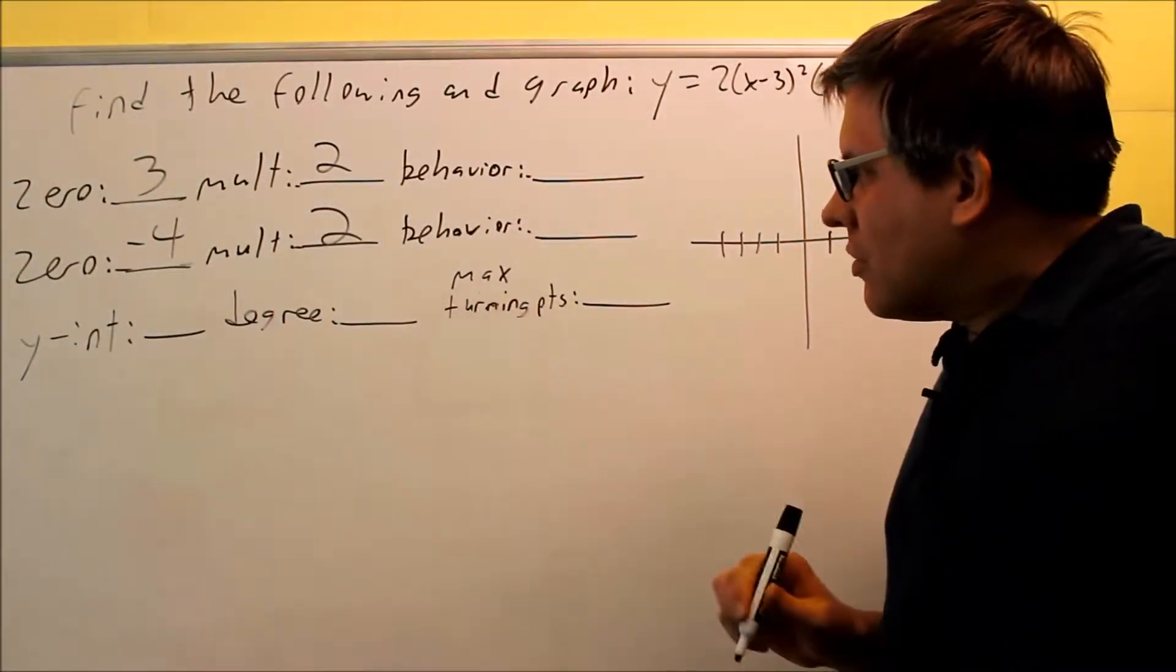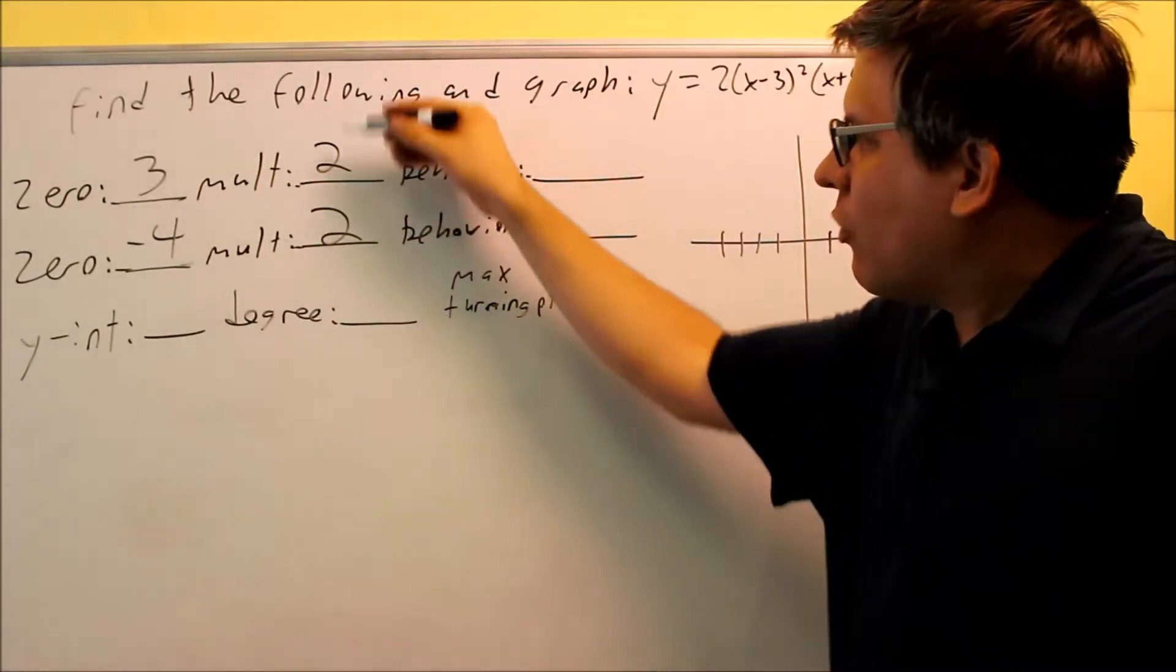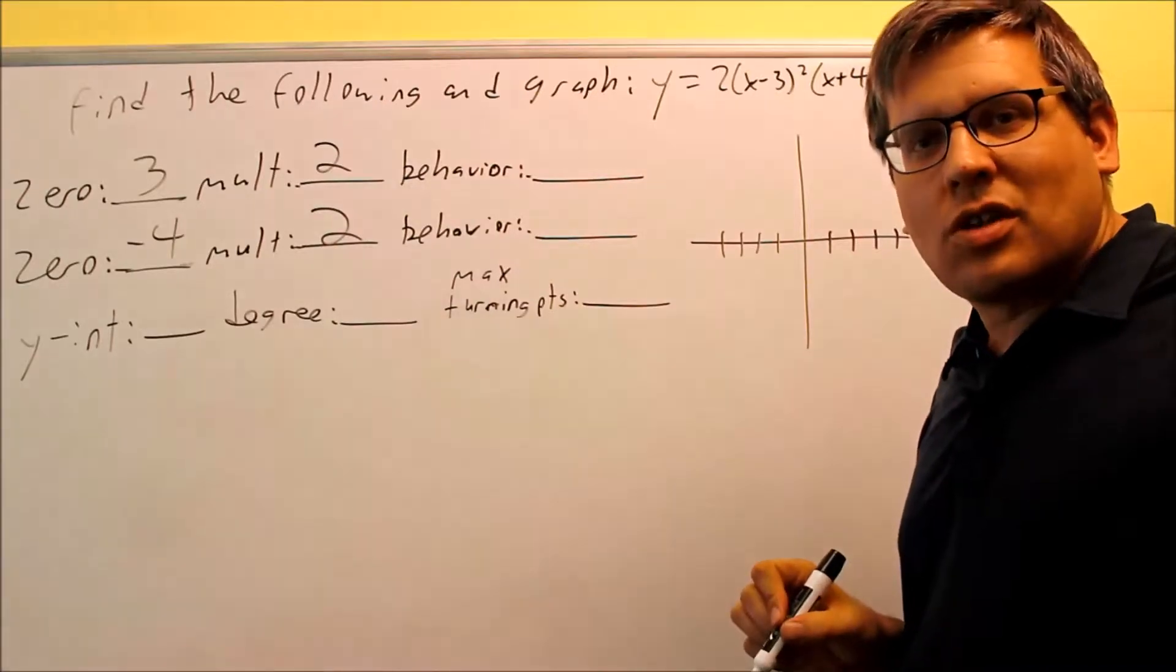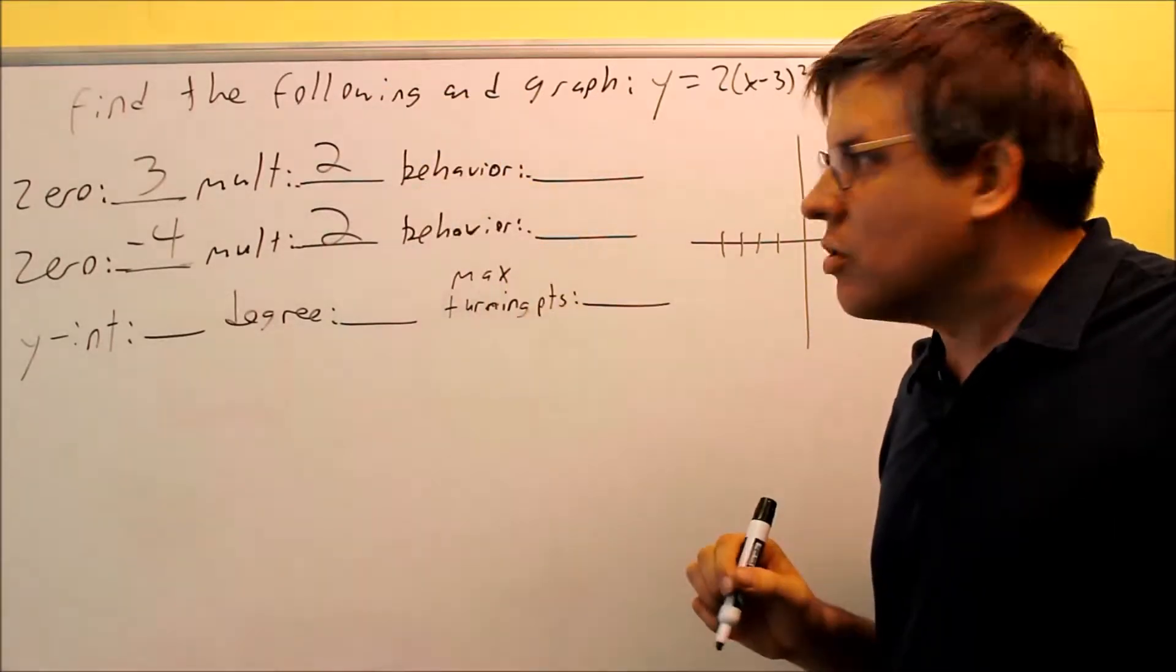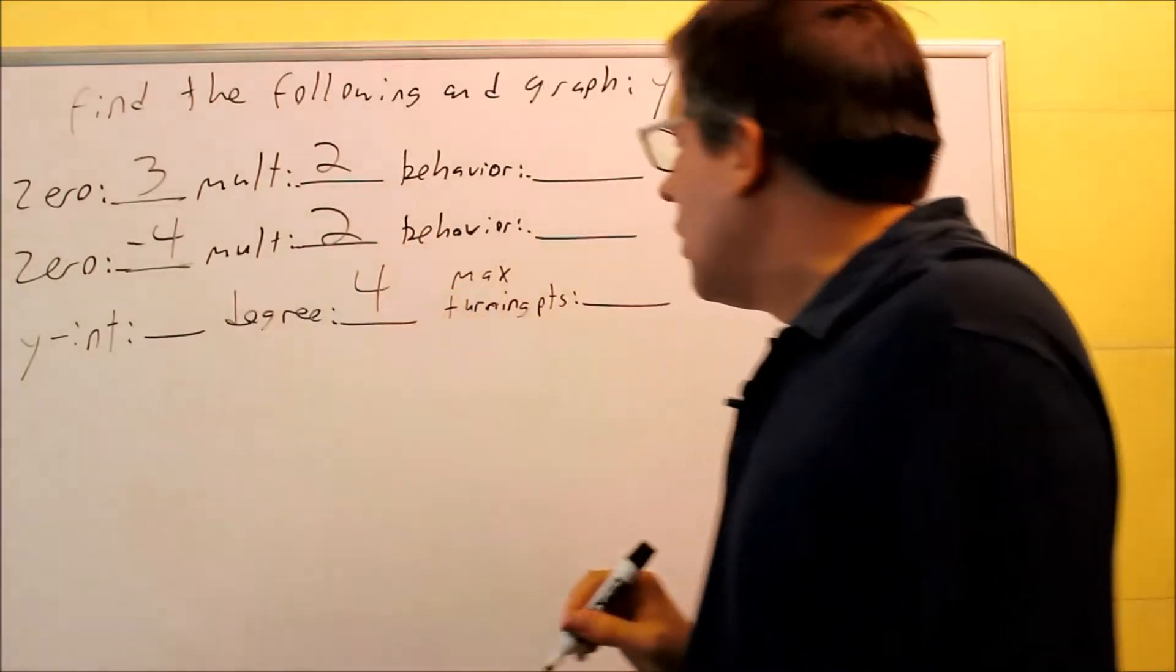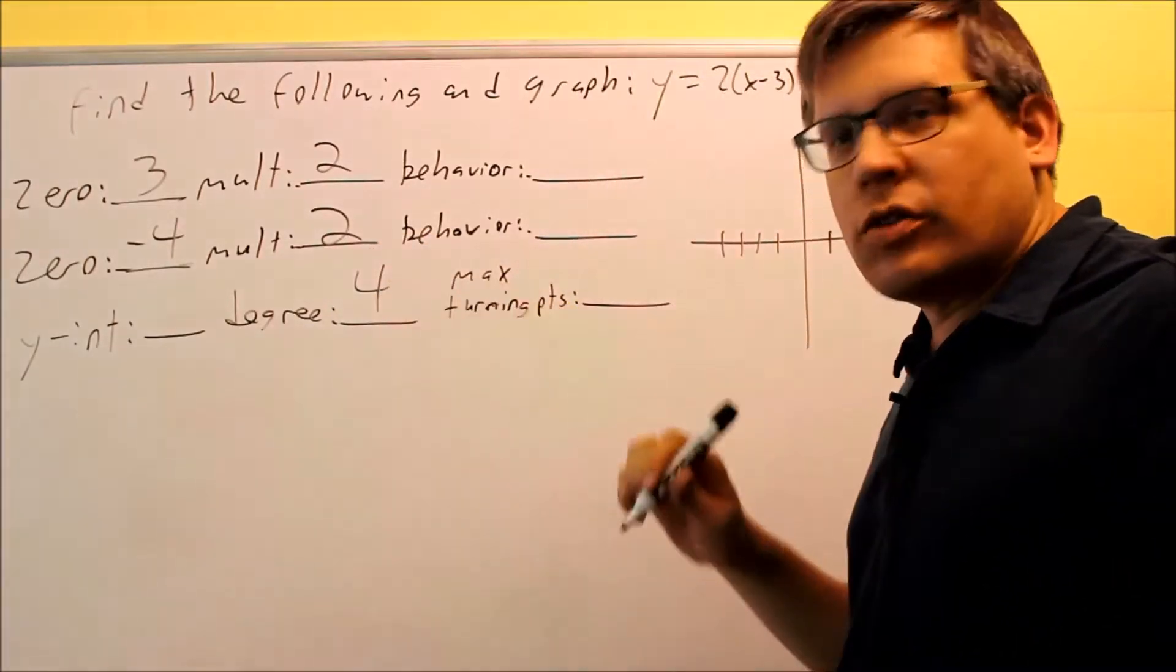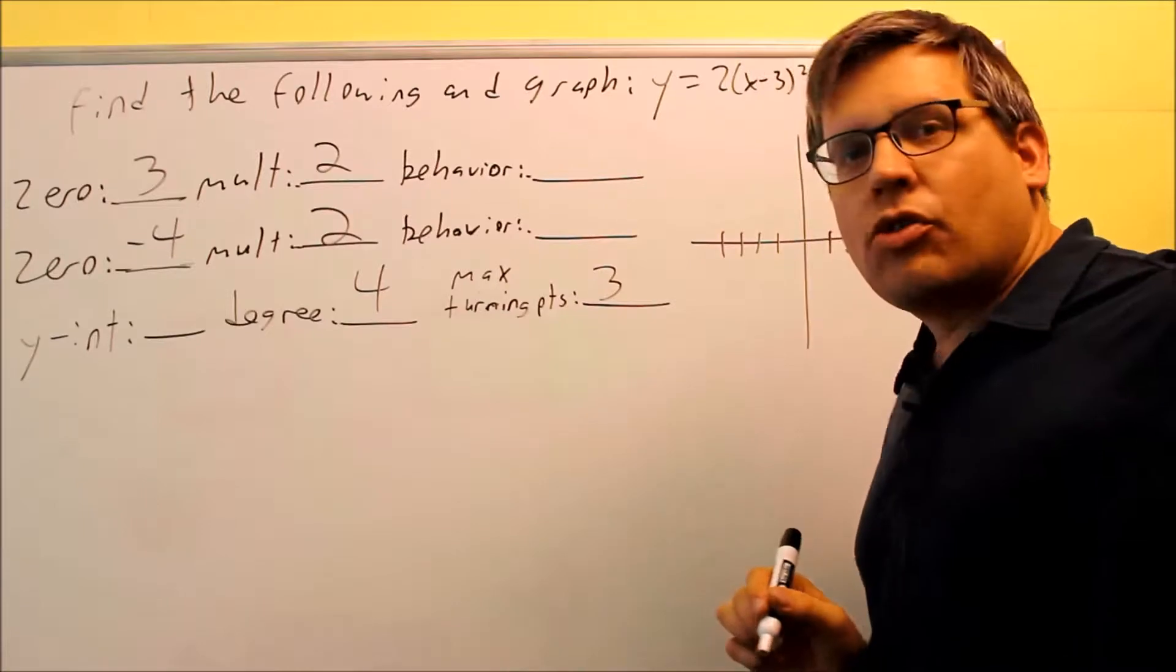The degree is going to be the sum of, we want to add the multiplicities together. So that's always how you find a degree, you add these two numbers together. So that's going to give you 4. The max number of turning points will be 1 less than that. That's going to be 3.